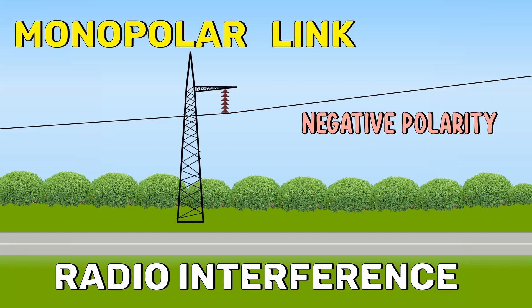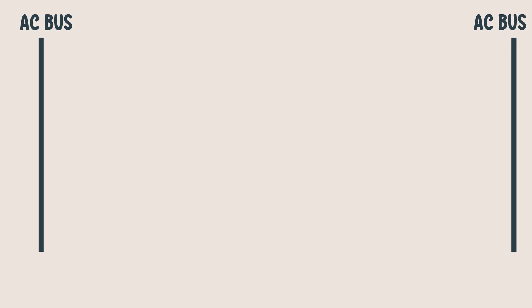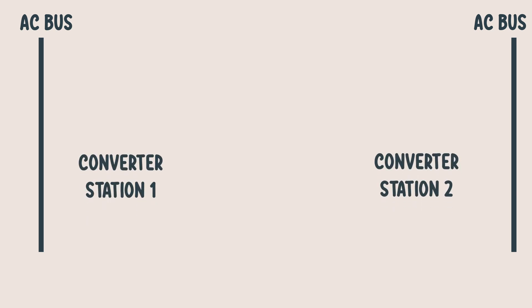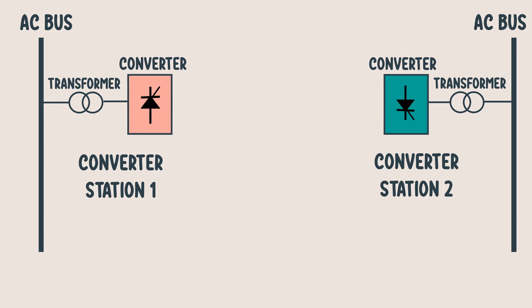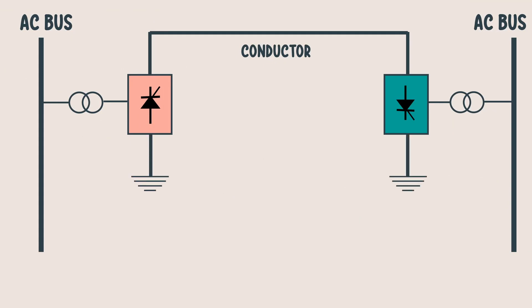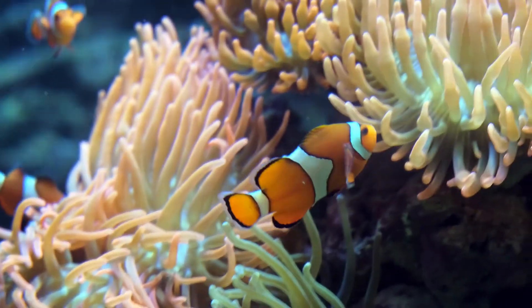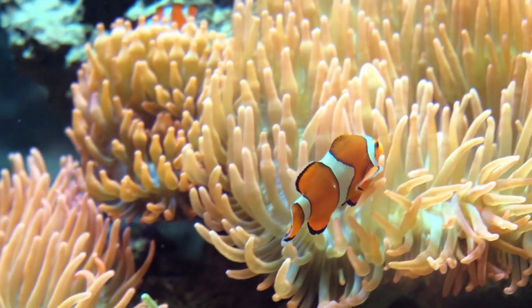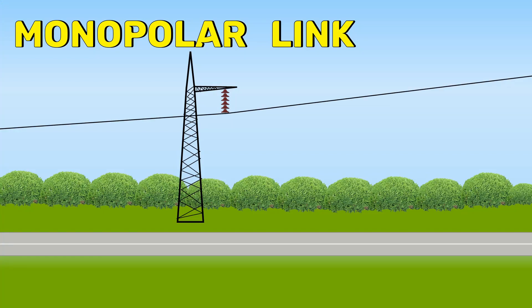Let's see a simple schematic diagram. We have two converter stations, both consisting of a transformer and a converter. In the monopolar link, we have one conductor that links these two stations. But we need a closed path for the current to flow. Therefore, it uses the ground as a return path. In case of submarine cables, seawater is used as the return path. Since it uses only one conductor, it is the most feasible solution in terms of cost reduction.